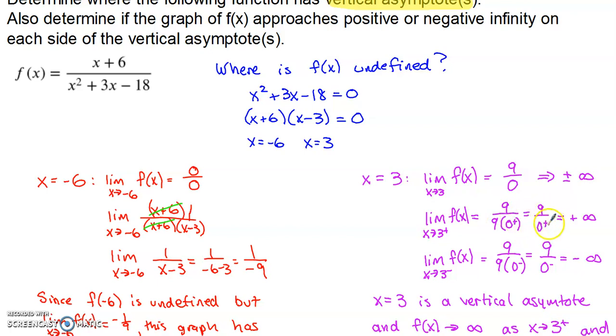This tells us that on the bigger side of 3, the y value tends to positive infinity. The graph goes up off the coordinate plane for x values slightly above 3.